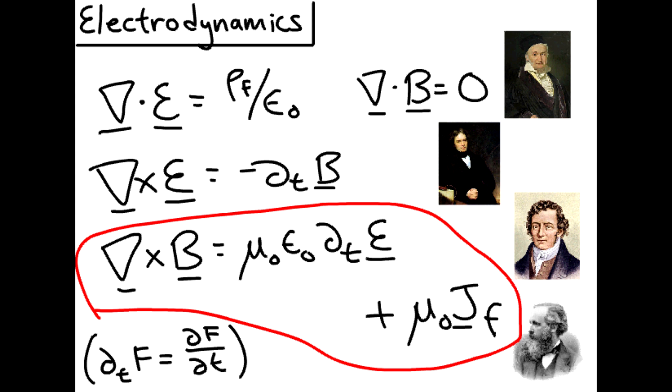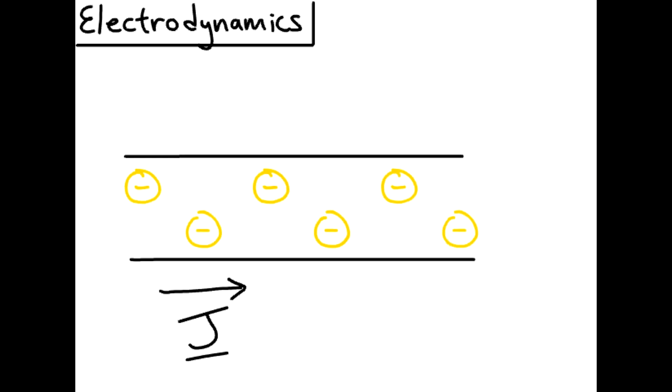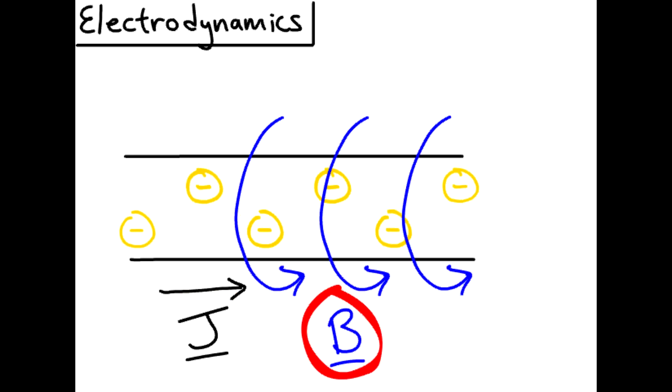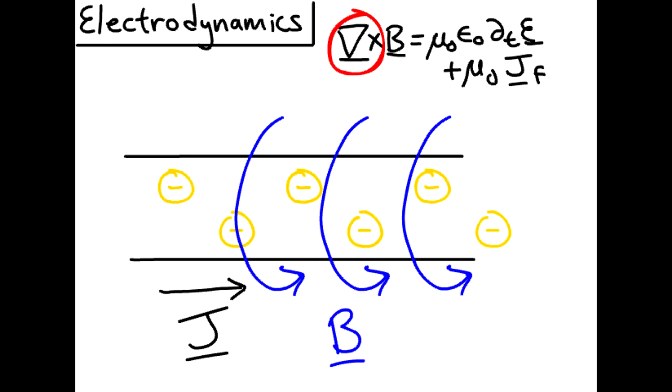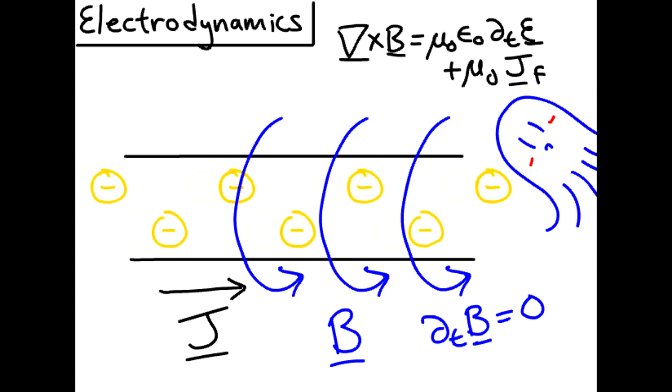We're going to look at Ampere's law in particular, in as much that both a changing electric field or a surface current can cause a magnetic field. This is demonstrated in the following simple experiment. Take a straight wire and pass a current through it. The current generates a magnetic field around the wire according to Ampere's law, which tells us the direction and strength of the magnetic field, given our input current. This magnetic field is constant and that's going to give us some complications.